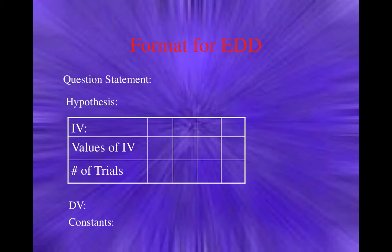This is the format for the EDD. It is a question statement, which means a clear statement of what question you are asking. A hypothesis, which is a guess — an educated guess — as to what the answer to the question statement will be. Then there's IV, which is the independent variable — that's the thing you're choosing to change.